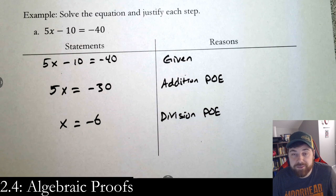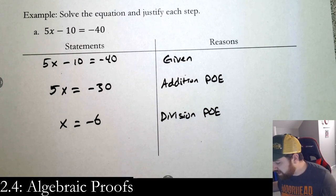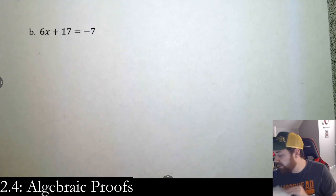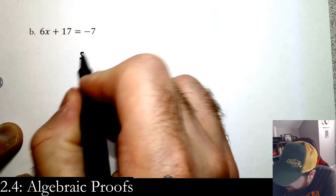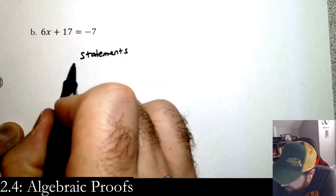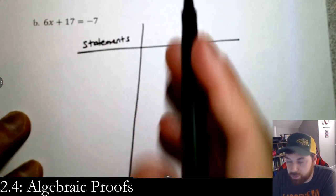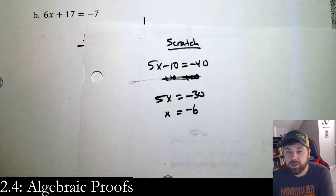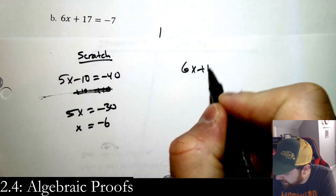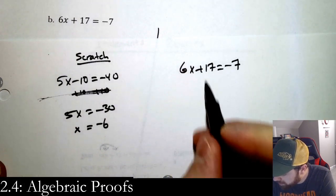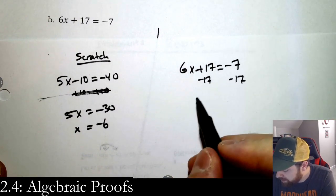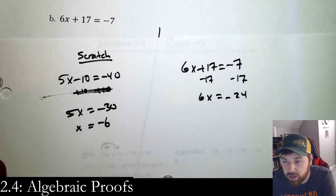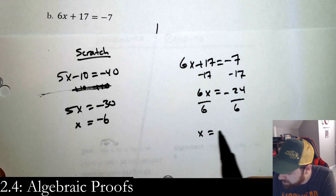Alright, let's do the next one. This one doesn't have a t-chart, so we're going to make our own two-column proof. Write your statements column and your reasons column. Step one: scratch paper — no one has to know. We have 6x + 17 = −7.